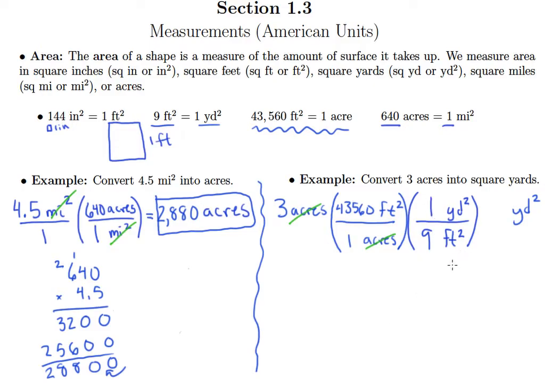And so we've got the units we want. Square yards are all that's left. Now we just need to do the arithmetic. So first of all, always look for opportunities to do some reducing. So rather than just multiplying 3 by 43,560 then dividing by 9, we can just real quickly say 3 divided by 3 is 1, 9 divided by 3 is 3. So what we have to do is divide 43,560 by 3.